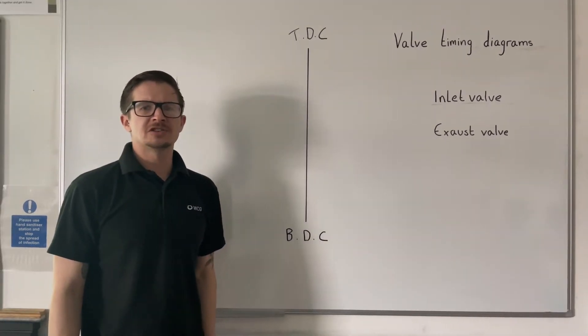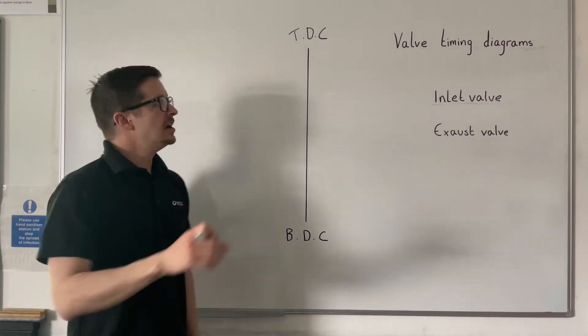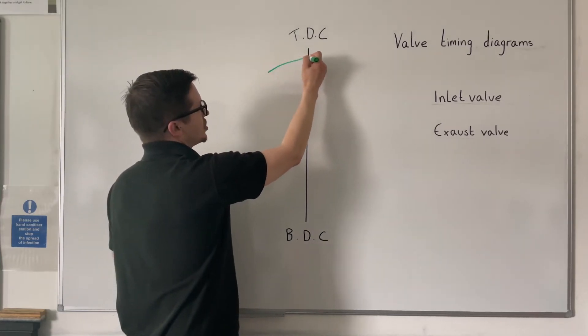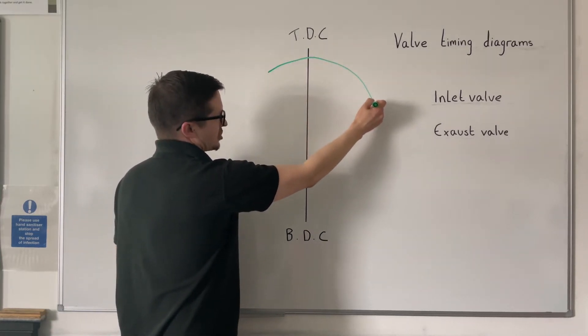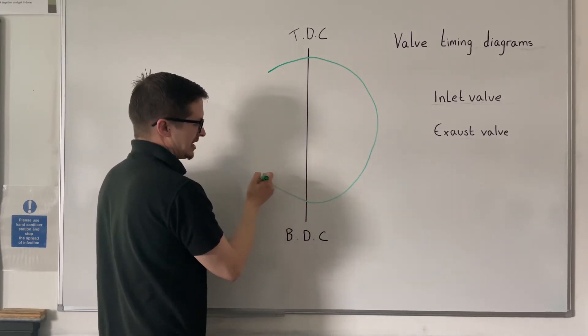The first stroke on the four-stroke cycle is the induction stroke. This is when the inlet valve opens. The inlet valve opens just before top dead centre, goes all the way down on the induction stroke, and closes just after bottom dead centre.